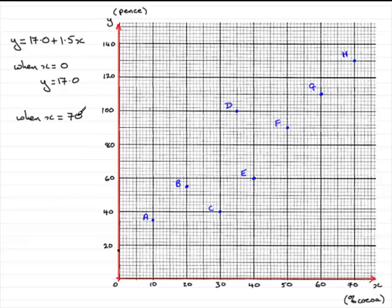And we therefore have that y equals, well, if you work that out, 17 plus 1.5 times 70, you'll end up with 122.